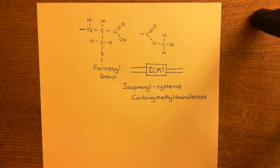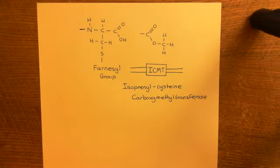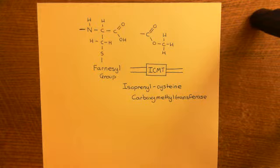The farnesyl group anchors the RAS protein, which was previously in the cytoplasm, into the cytoplasmic aspect of the membrane of the endoplasmic reticulum. Once anchored there, enzymes in the ER membrane — such as RAS converting enzyme 1 and isoprenyl cysteine carboxymethyl transferase — can act on the RAS protein.